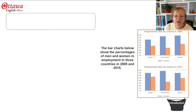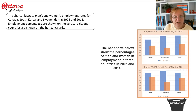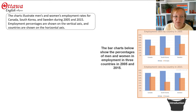For the introduction, you're going to start by paraphrasing the statement. You don't want to parrot it — you don't want to just pick out and exchange one or two words for synonyms. You want to try to say this in your own words, and you want to include some details from your diagram. What we've said is: the charts illustrate men's and women's employment rates for Canada, South Korea, and Sweden during 2005 and 2015. We've paraphrased the statement and added a little information about the axes — employment percentages are shown on the vertical axis and countries on the horizontal axis. And that's all you need for your introduction.